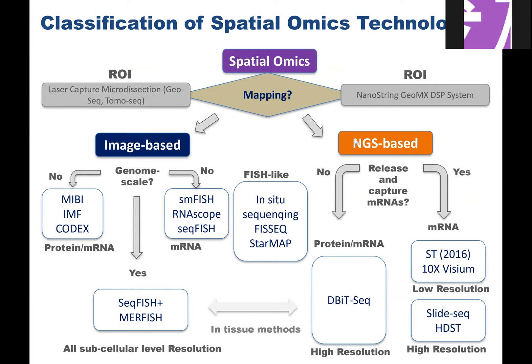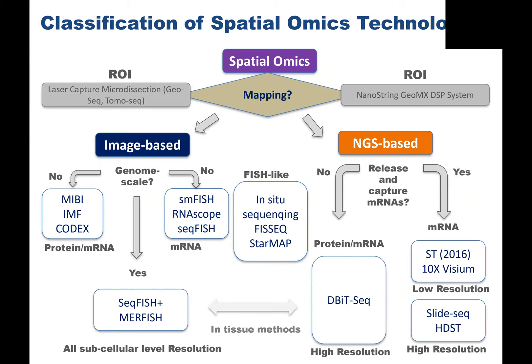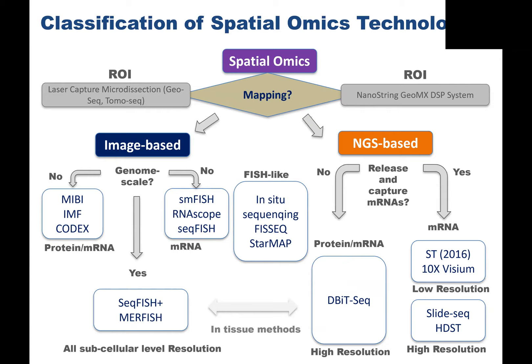I would like to categorize spatial omics technologies into two major subsets: image-based and NGS-based. For decades, people have been looking at spatial information either by imaging data or by picking up regions of interest using laser microdissection, which has been around for many years. You can also use laser microdissection followed by next-generation sequencing to get spatial omics information, with reasonably good resolution but not at the cellular level. It is also not feasible to map an entire tissue across a very large area using region-of-interest techniques.